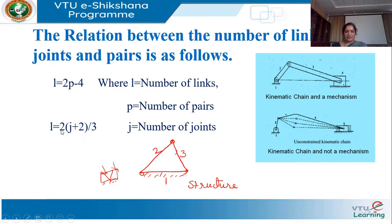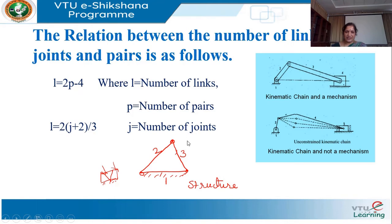There is a relation between the number of links, joints, and pairs. The expression is: L = 2P − 4, where L is the number of links and P is the number of pairs. Another relation between links and joints is: L = (2J + 2) / 3, where J is the number of joints. We also discussed binary joints, ternary joints, and quaternary joints.